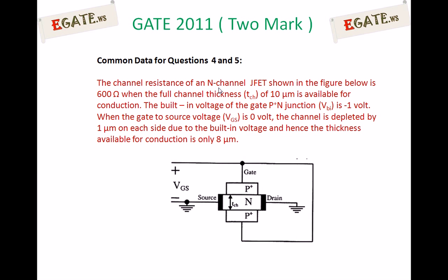The data for this question: the channel resistance of an n-channel JFET shown below is 600 ohms when the full channel thickness of 10 micrometers is available for conduction. The built-in voltage of the gate junction is minus 1 volt. When Vgs equals 0 volts, the channel is depleted by 1 micrometer on each side due to built-in voltage, so the thickness available for conduction is only 8 micrometers.